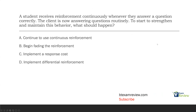Question one. A student receives reinforcement continuously whenever they answer a question correctly. The client is now answering questions routinely. To start to strengthen and maintain this behavior, what should happen? This appears to be a DTT procedure. We're clearly in the skill acquisition phase because we are delivering continuous reinforcement. With continuous reinforcement, we're typically teaching a skill because every single response is getting reinforcement, which is great at the beginning.